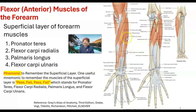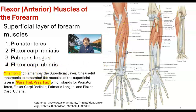Then we have the flexor carpi ulnaris, which has different innervation than the other muscles. The other muscles receive innervation from the median nerve, but this muscle is innervated by the ulnar nerve. A useful mnemonic to remember the superficial layer muscles is 'pass-fail' — pronator teres, flexor carpi radialis, palmaris longus, and flexor carpi ulnaris.